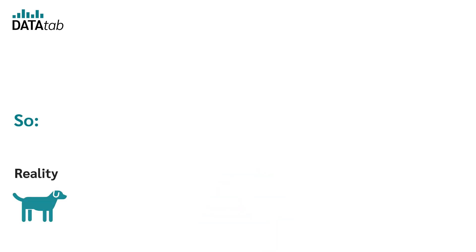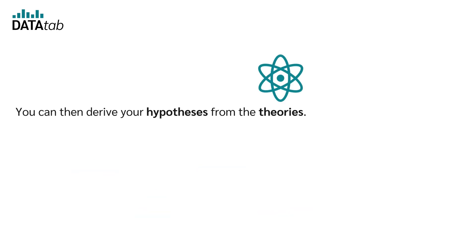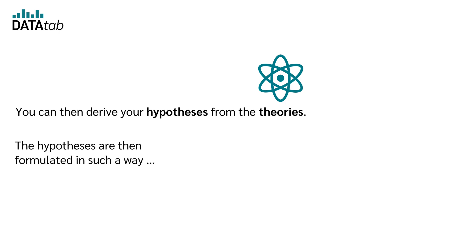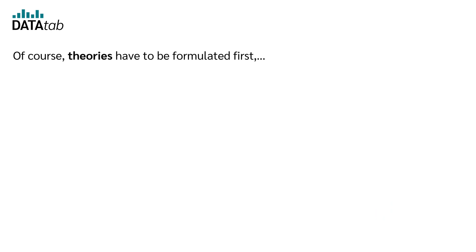Reality is very complex, therefore we use simplified theories. You can then derive your hypotheses from the theories. The hypotheses are formulated in such a way that they can be tested using collected data. Theories have to be formulated first, but this is rather the task of qualitative research.